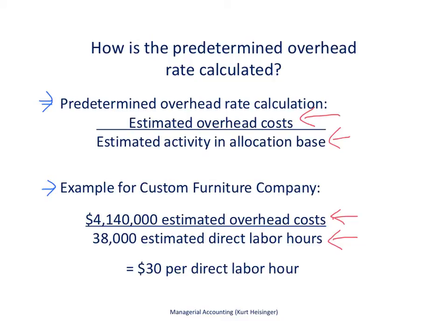That gives us a rate of $30 per direct labor hour to allocate overhead. For example, if a worker spends one direct labor hour building a wood coffee table, then $30 in overhead is allocated to that table — in addition to, and separate from, the direct labor cost and direct materials cost. This is the overhead allocated to each individual job based on $30 per direct labor hour.